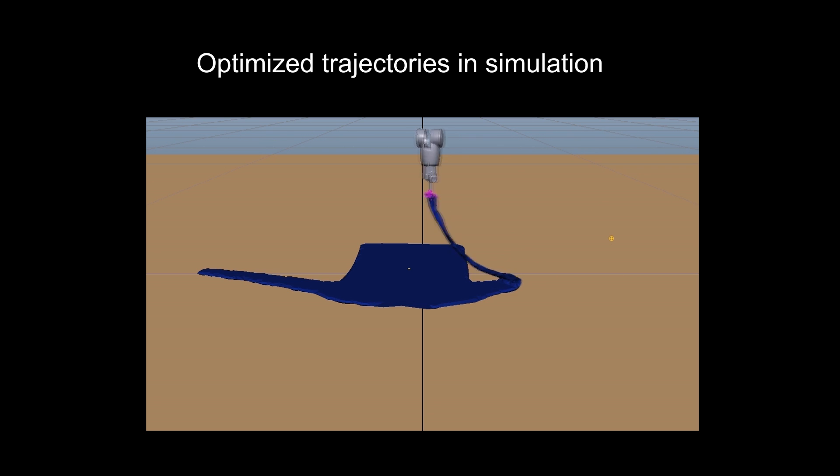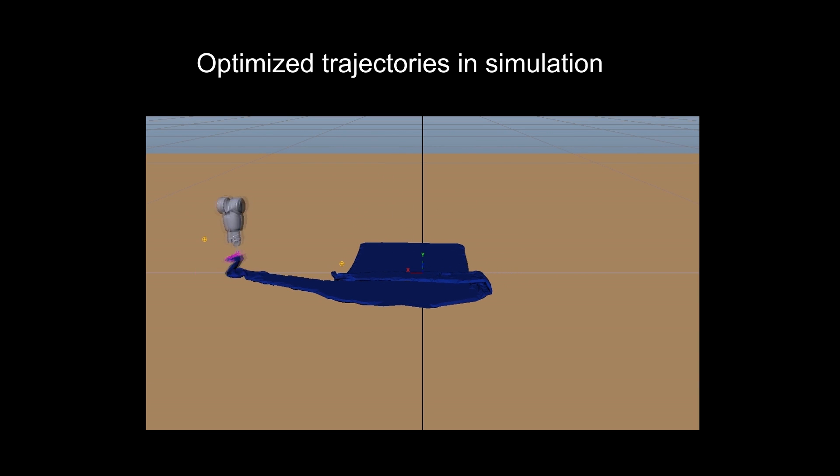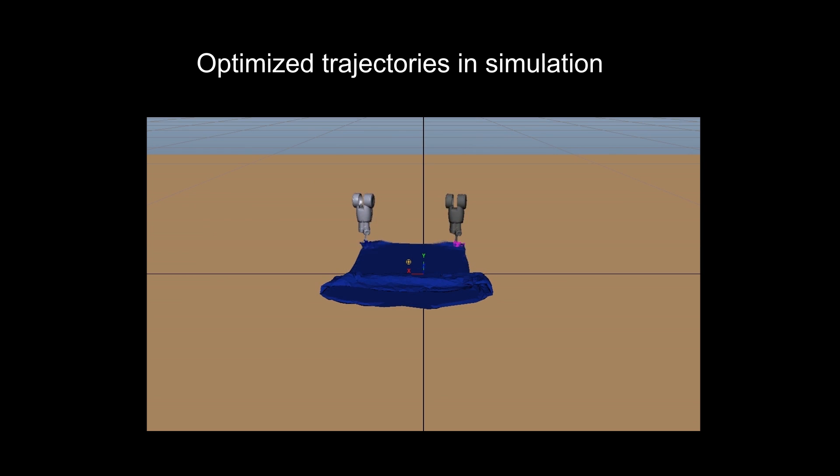The function measures the dissimilarity between a user-specified folded shape and the folded garment in simulation, which is then used as an error measurement to create an optimal trajectory.